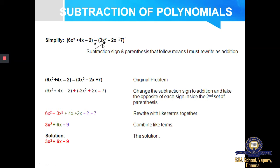Step 1: you are supposed to open up the bracket of the second polynomial. How will you open it? You have to multiply minus with each and every term. So what you are supposed to do is change the symbol. Minus into plus 3X square gives me minus; then minus into minus gives me plus; then minus into plus gives me minus in turn. Then I have to write down my first polynomial term as it is.